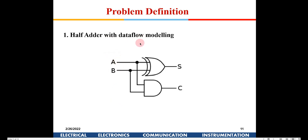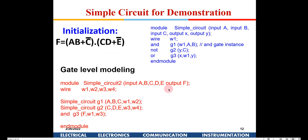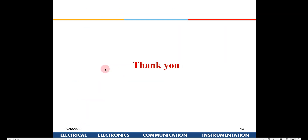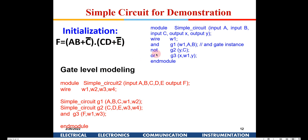For our assignment, we need to make a half adder using data flow modeling. We are not going to define gates — we just write that sum equals A XOR B and carry equals A AND B. This is a small program using data flow modeling. We will discuss more in the next class; let me now demonstrate a few things.